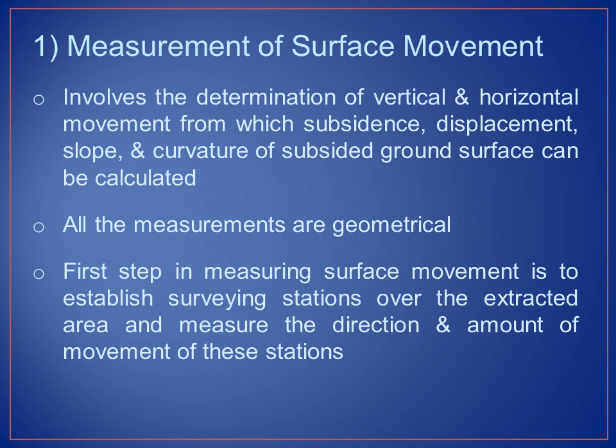Measurement of surface movement involves the determination of vertical and horizontal movement, from which subsidence, displacement, slope, and curvature of the subsided ground surface can be calculated. All the measurements are geometrical. The first step in measuring surface movement is to establish surveying stations over the extracted area and measure the direction and amount of movement of these stations.